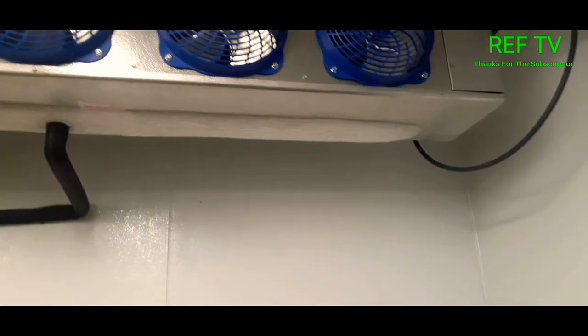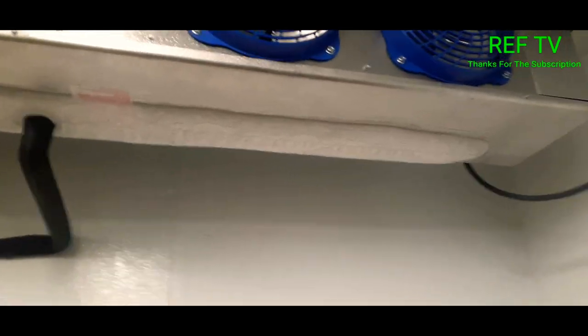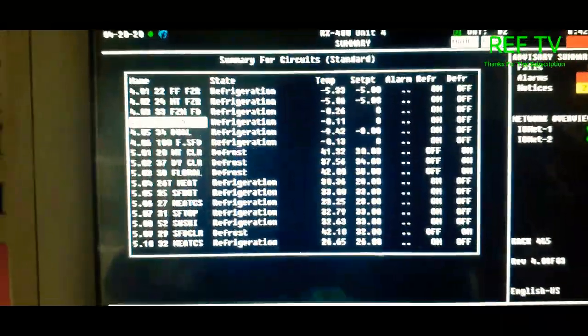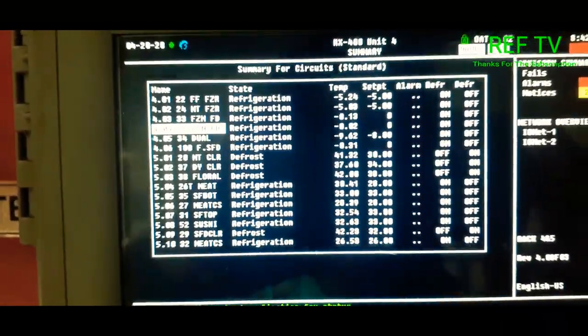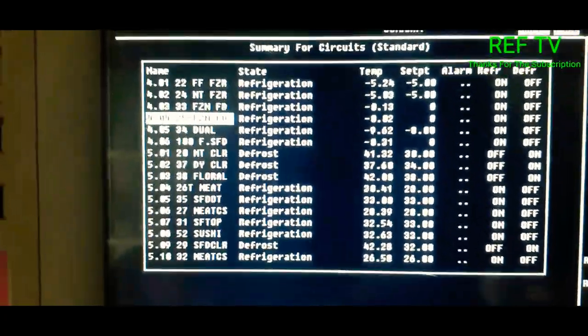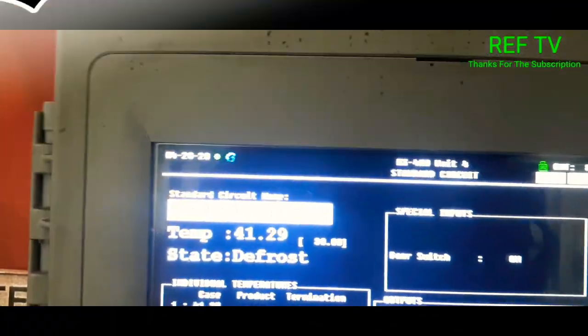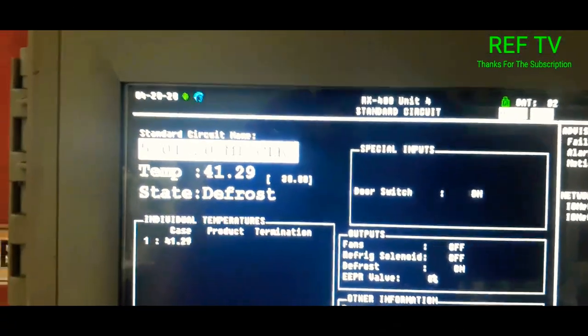As you can see, we got ice growing at the back of the evaporators. Same thing on this one. Two evaporators iced up. All right, so we're up at our controller. Let's look for our circuit. We're looking for circuit 20, meat walk-in cooler, as you can see right here. So we are in defrost.